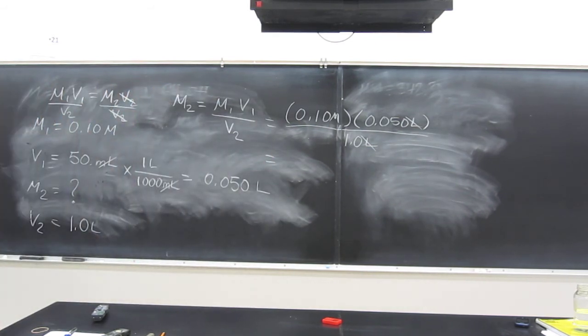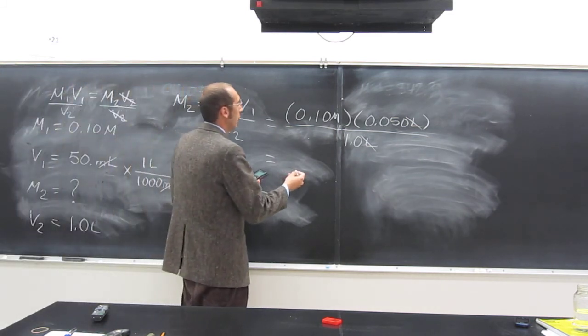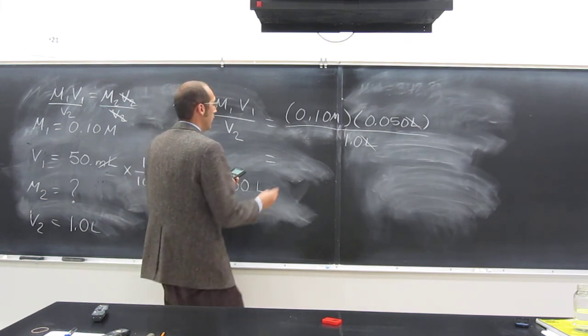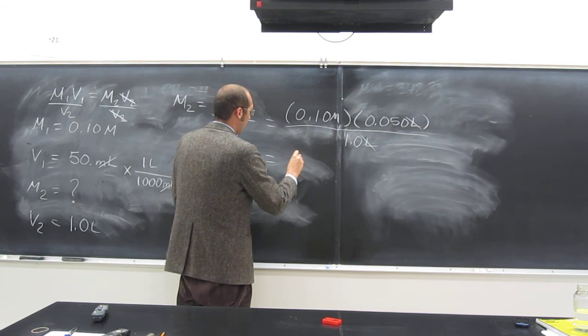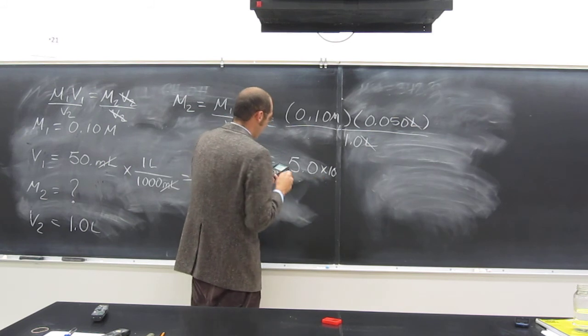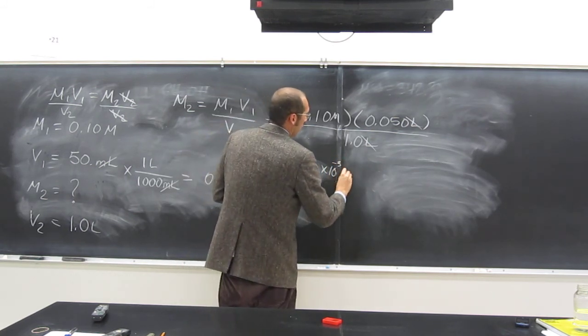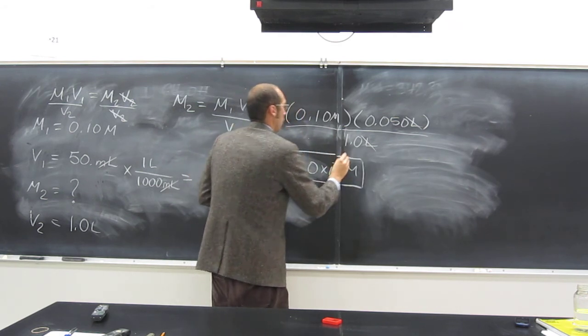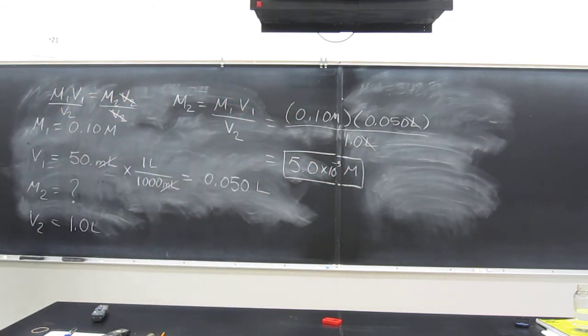So now just take your calculator. 0.1 times 0.05 divided by 1. So remember, how many sig figs is this going to be? Two, right? So you can write it a number of ways, but I'm going to write it in scientific notation. 5.0 times 10 to the negative 3 molar. Does that make sense? Any questions about that one? Okay.